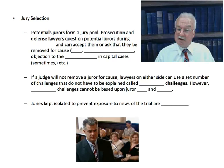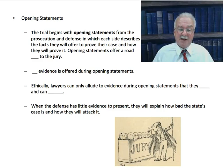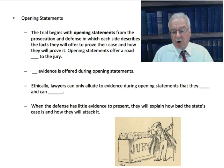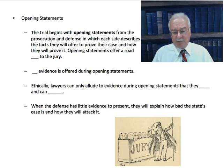The first actual courtroom drama after jury selection is opening statements. The trial begins with opening statements from the prosecution and defense, in which each side describes the facts they will offer to prove their case and how they will prove it. Opening statements are a roadmap to the jury. No evidence is offered during opening statements — it's simply explaining the tactic of each side. Ethically, lawyers can only allude to evidence they actually have and can prove. When the defense has little evidence to present, they will explain how bad the state's case is and how they will attack it.